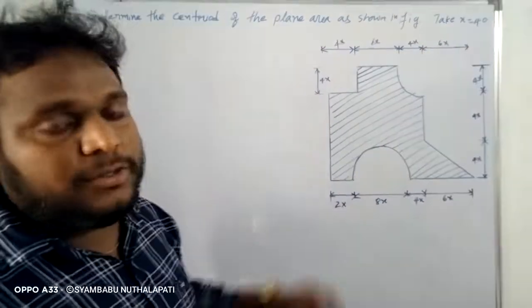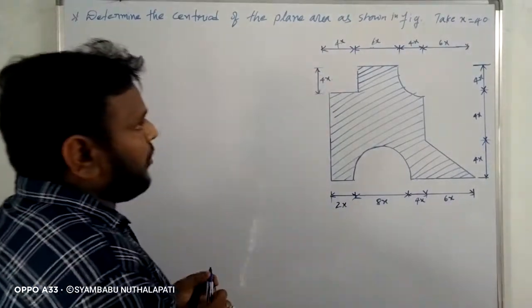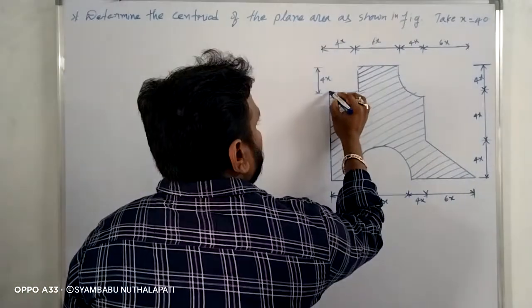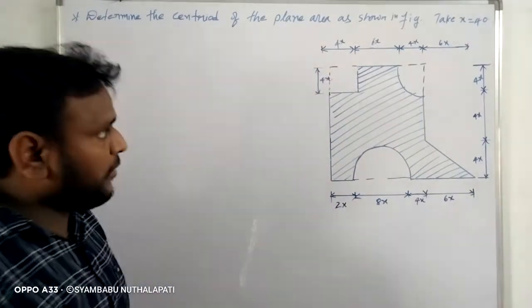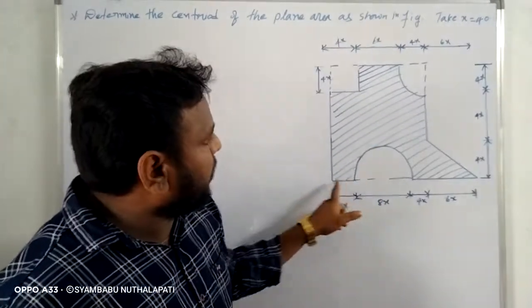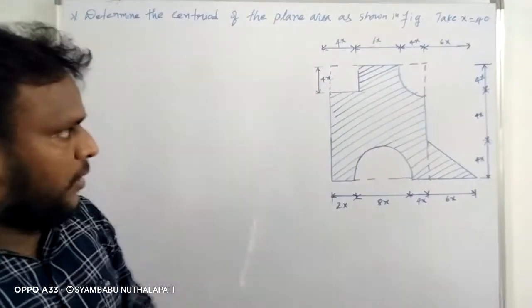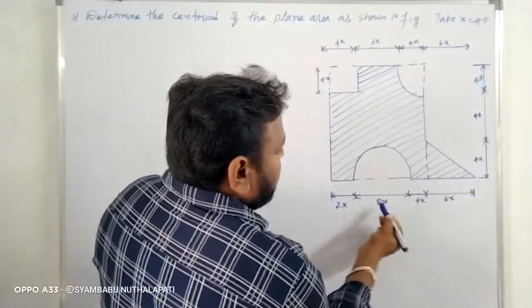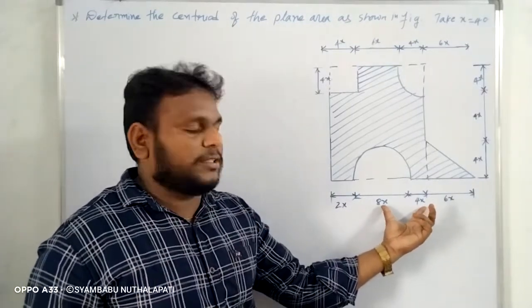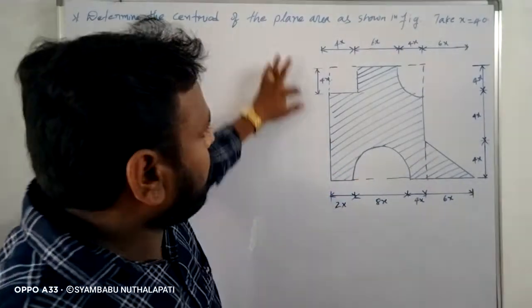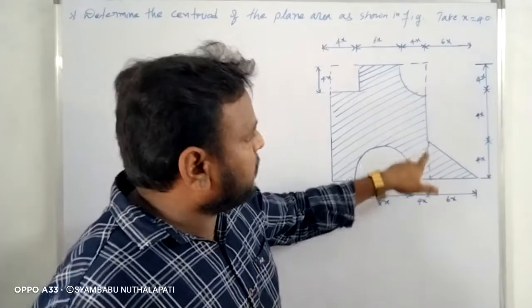First, divide the entire component. This entire shape is formed as a block. The shaded areas form the components. This area is 2x plus 10x, that is 2x plus 8x plus 10. This area is 10x, and this is 10x plus 4x, giving 14x. The height is 4x plus 4x plus 4x, that is 12x. Total area is 14x into 12x.